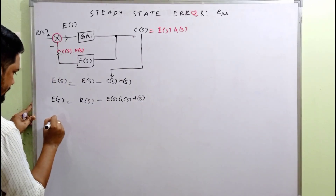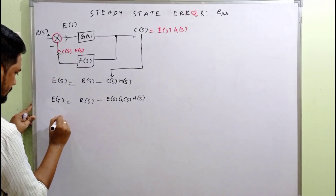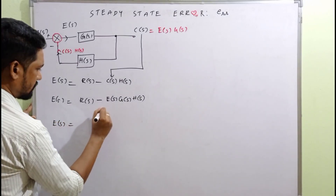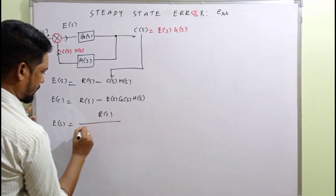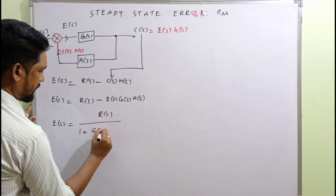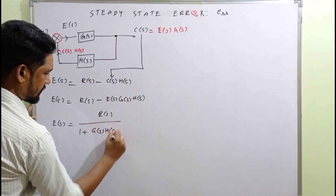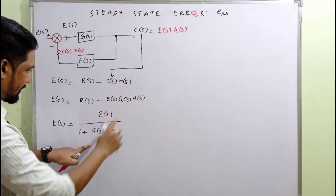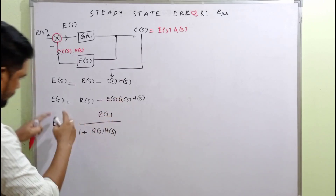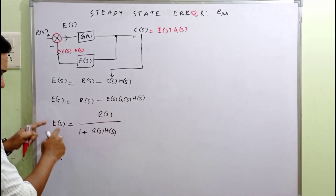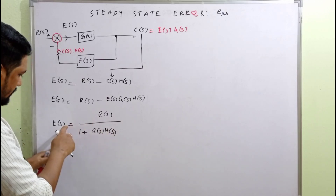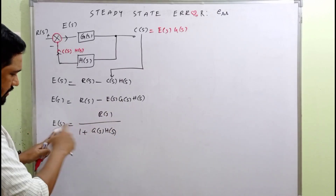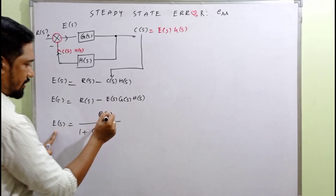Finally, what we have is E(s) = R(s) by [1 + G(s)·H(s)]. This is direct — take E(s) common: E(s)·[1 + G(s)·H(s)] = R(s), then simplify to get E(s).